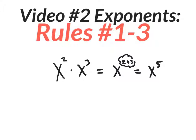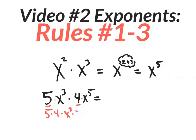We also learned that sometimes we have coefficients out in front of the variables, like five x to the third times four x to the fifth. You just rearrange it — put the coefficients, the five and the four, together, and put the x's together, because it's all multiplication. So you rewrite this as five times four times x to the third times x to the fifth. Five times four is 20, and x to the third times x to the fifth is x to the eighth — you simply add the exponents. That was rule one.